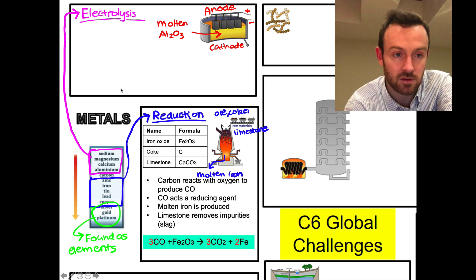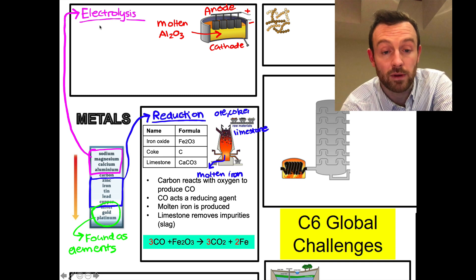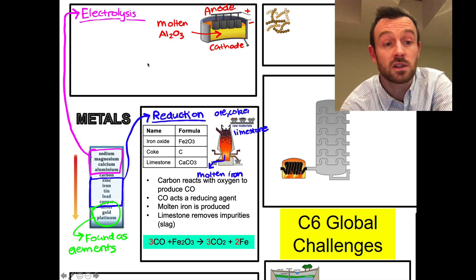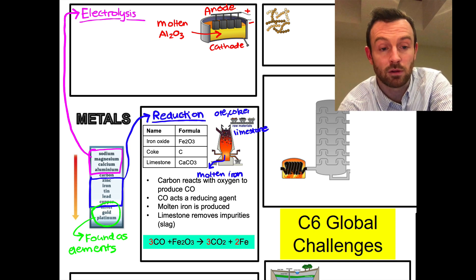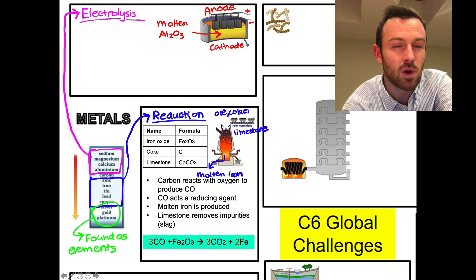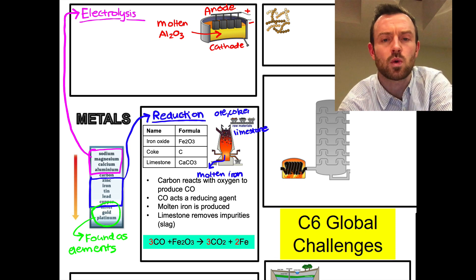But there's another process called electrolysis, which is for metals that are more reactive than carbon. The first thing you need to know about electrolysis is you have to melt the compound - you have to make the aluminium oxide molten. That requires a lot of energy; you have to heat it up a lot. And also we dissolve it in something called cryolite, molten cryolite, which slightly makes that a bit of an easier process.